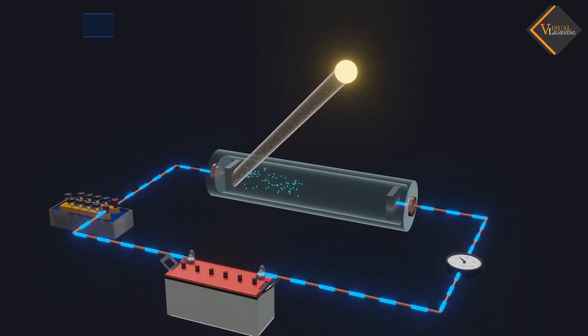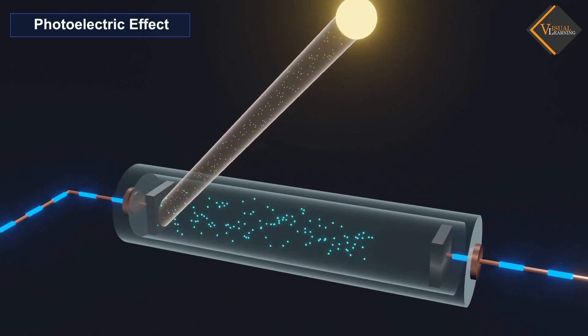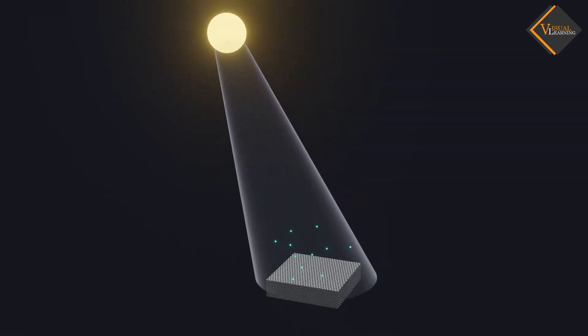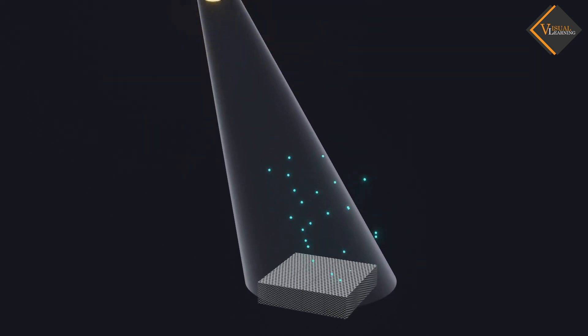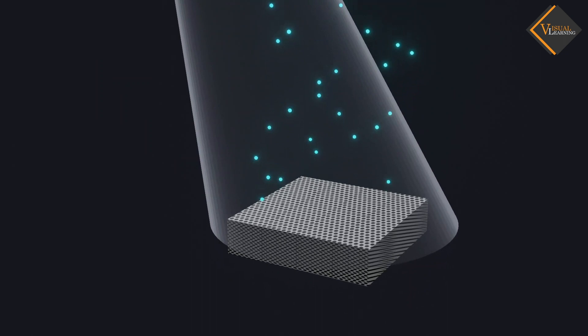In this video, we will understand photoelectric effect. The photoelectric effect is a phenomenon in which light radiation falls on a metal surface causing the emission of electrons from that metal surface.